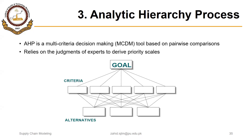In the last segment we discussed the factor rating method, which is a multi-criteria decision making tool used to decide the best facility location out of three options. In this segment we will discuss AHP, analytic hierarchy process, which is quite similar to the factor rating method but is more systematic and mathematical.